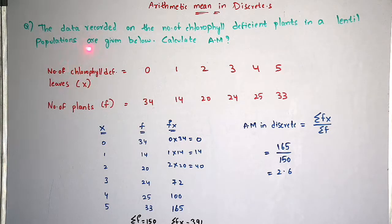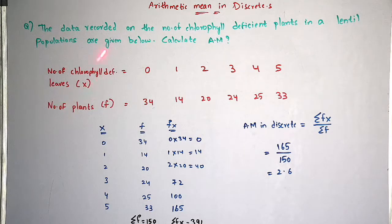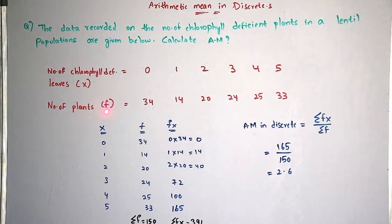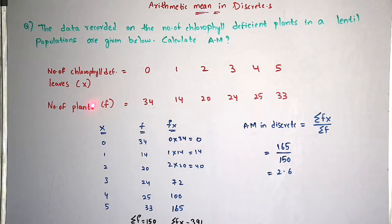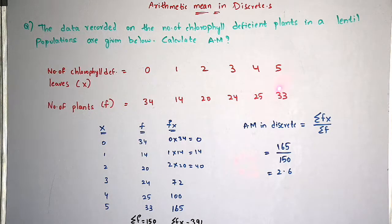Coming to the question data: number of chlorophyll deficient leaves (x) are 0, 1, 2, 3, 4, 5 — these are variables denoted by x. The number of plants (f), which is frequency, are 34, 14, 20, 24, 25, 33. Since both x and f are present, this belongs to discrete series.